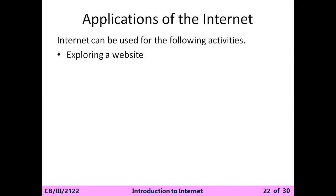Internet can be used for the following activities. First: exploring the website. To open any website you need internet. For example, if there is an online exam, you need internet. If you want to open the 'Between Us' website — Between Us is one type of website application — you need internet to access it.